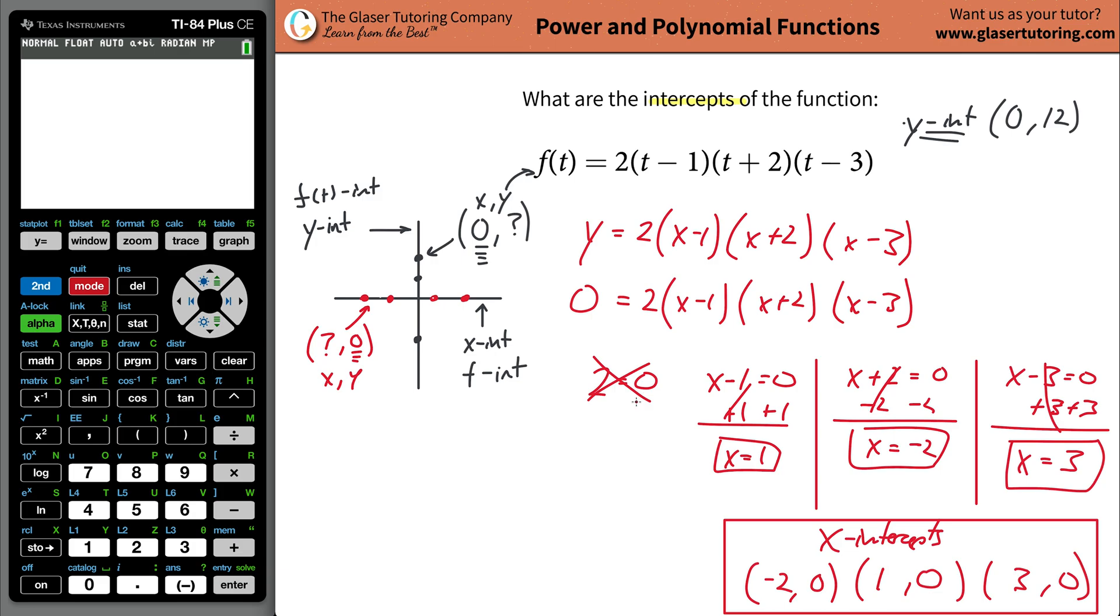And those are all the intercepts, and that's it. Now, if you don't trust me, trust the calculator. Go to the calculator, plug in your function. So hit 2 times. You don't even need to hit times. You can just do parentheses. Then do x minus 1. Don't plug in the t. Just plug in the x. Open parentheses, x plus 2. Close parentheses. Open parentheses, x minus 3. And close them up. Hit graph.